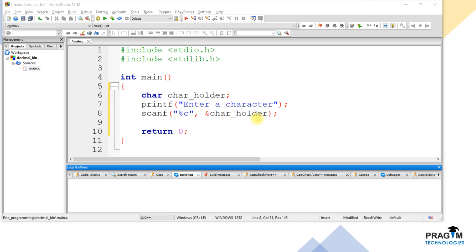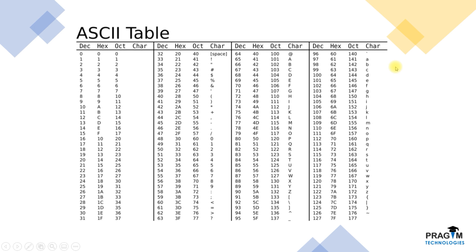Now we have to find the previous character of the character entered by the user. We know that character variables store the ASCII value of the given character. For example, if I give character 'b' as an input, then the character variable stores its ASCII value, which is 98. So to get character 'a' as an output, we have to subtract 1 from 98.